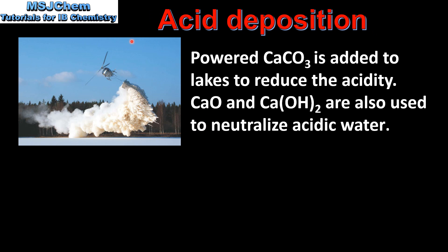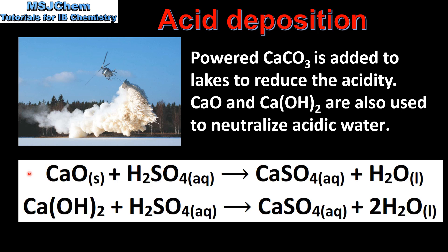Finally, we look at how the effects of acid deposition can be reduced. Powdered calcium carbonate is added to lakes to reduce acidity. Calcium oxide and calcium hydroxide are also used to neutralize acidic water. In these two equations, we can see the reaction of calcium oxide and calcium hydroxide with sulfuric acid — in both reactions the products are calcium sulfate and water.